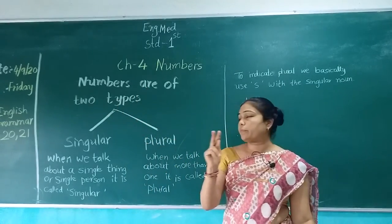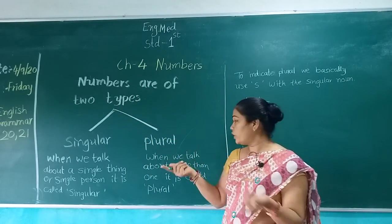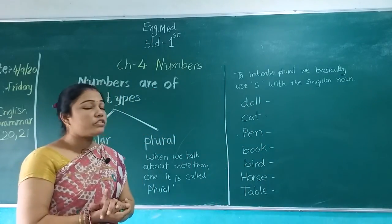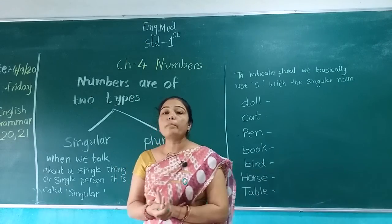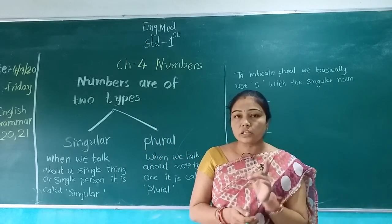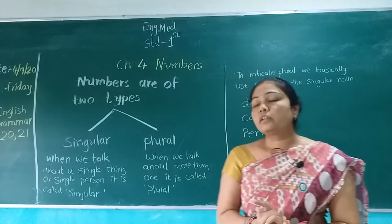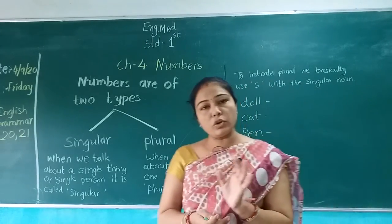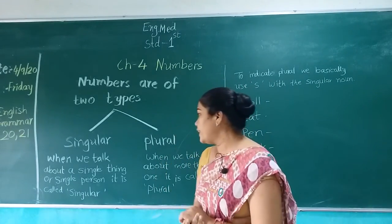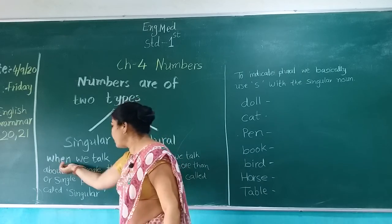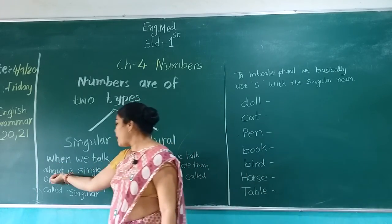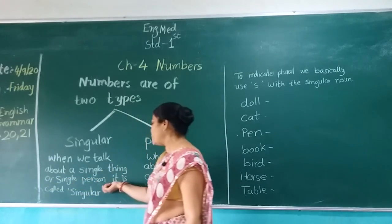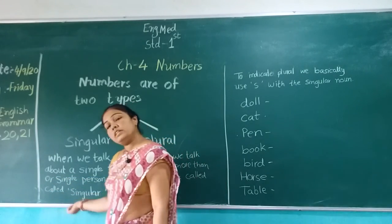How many types? Two types. One is singular and one is plural. What is singular number? When we talk about a single thing or a single person, it is called singular.